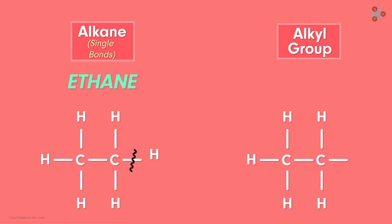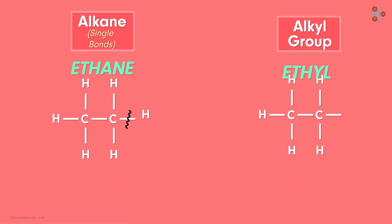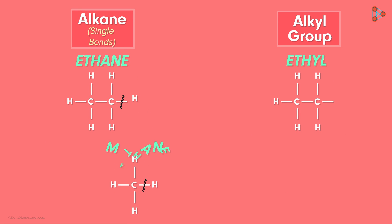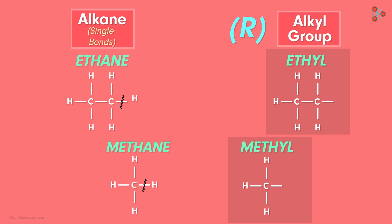Here it is derived from ethane, hence it is called an ethyl group. Similarly, if we remove one hydrogen atom from methane, it will be called a methyl group. Alkyl groups are usually represented with the letter R written in upper case. This was a general overview of what alkyl groups are.